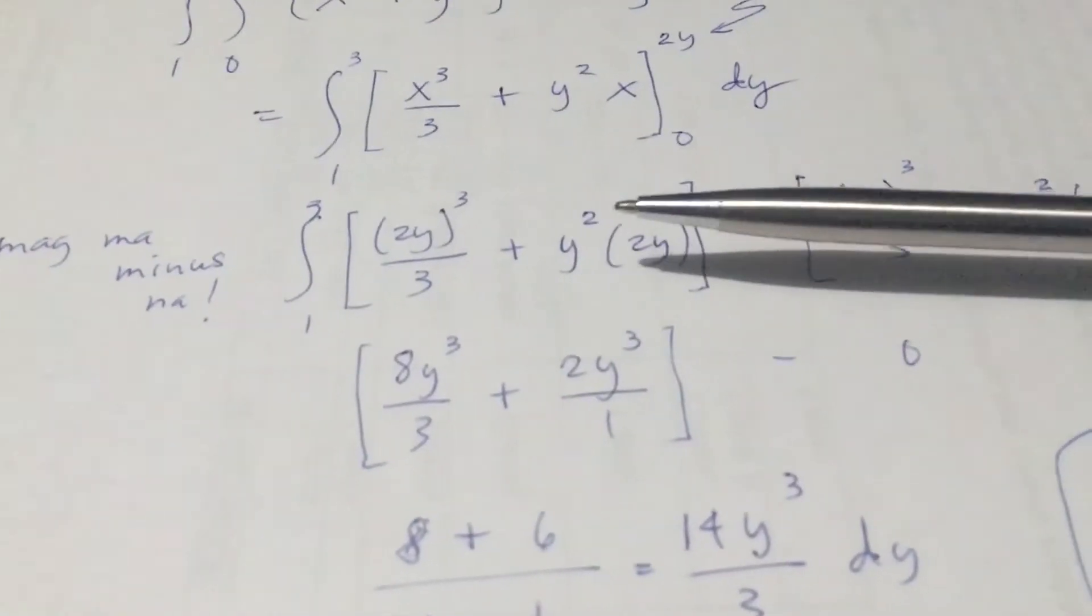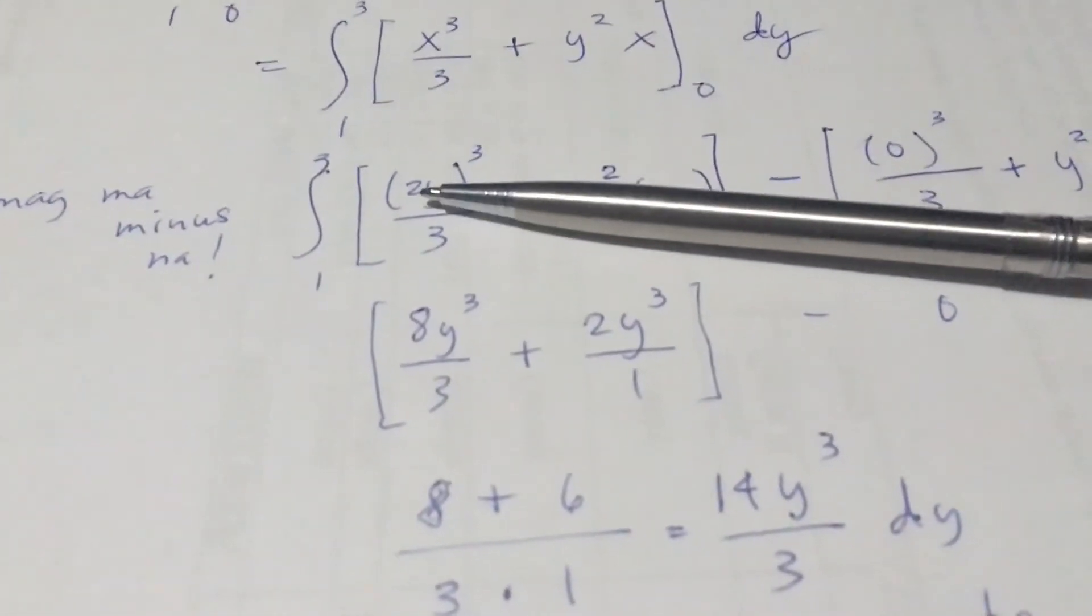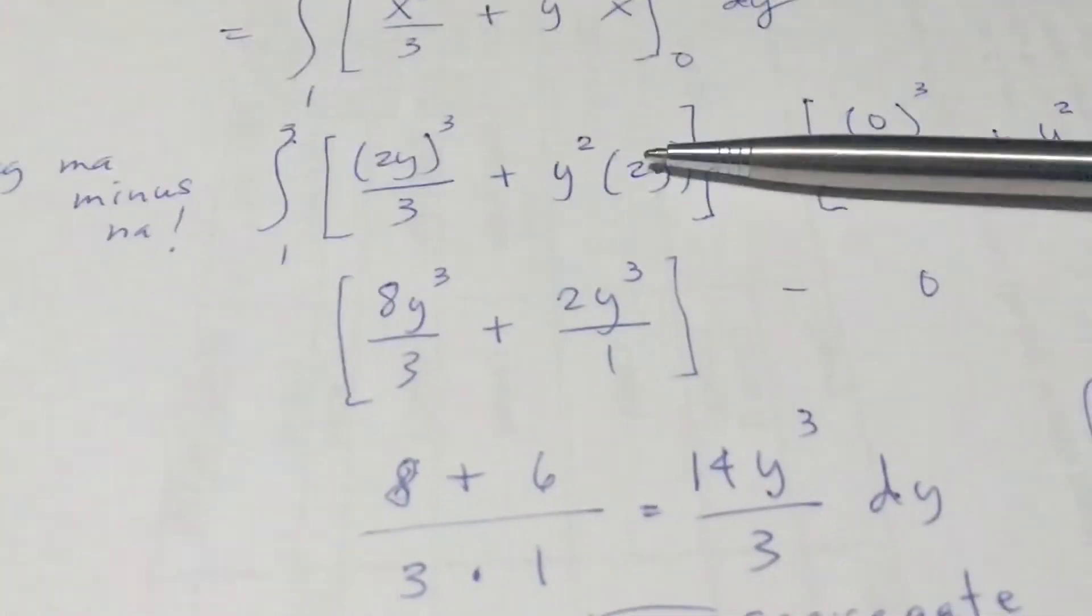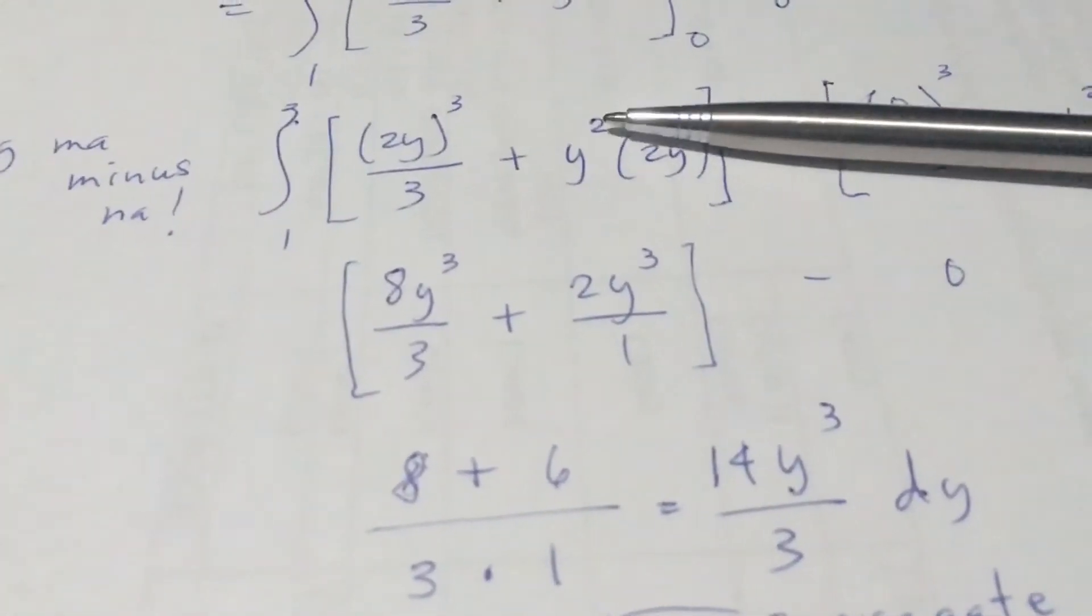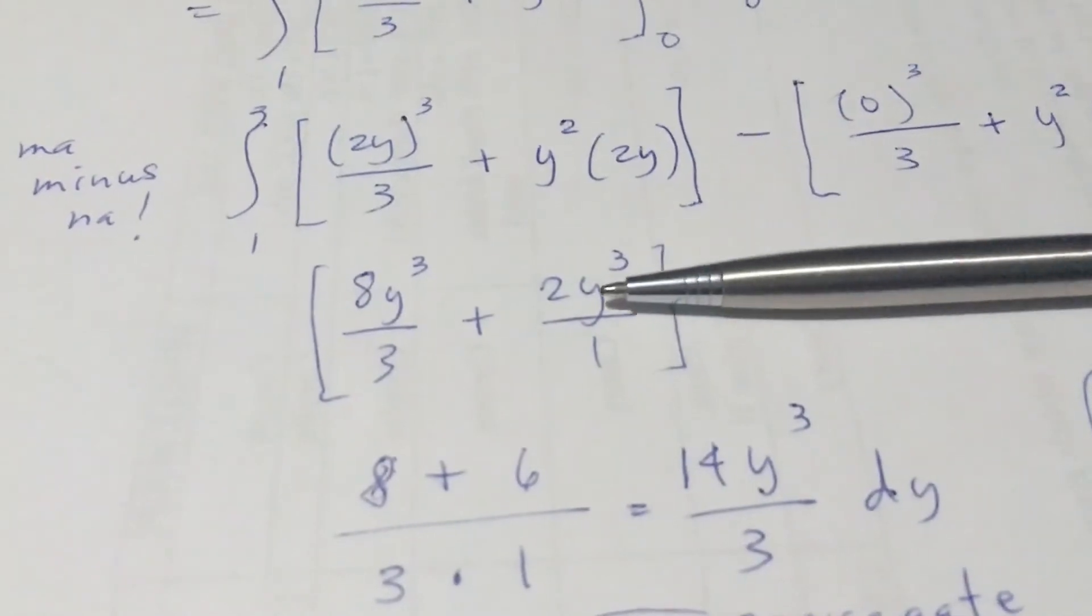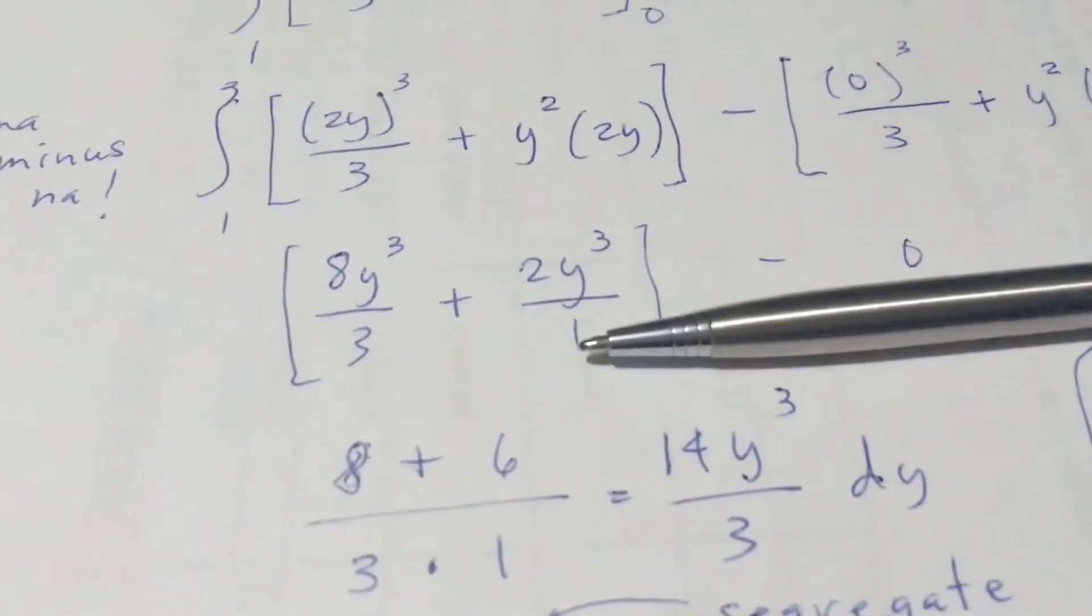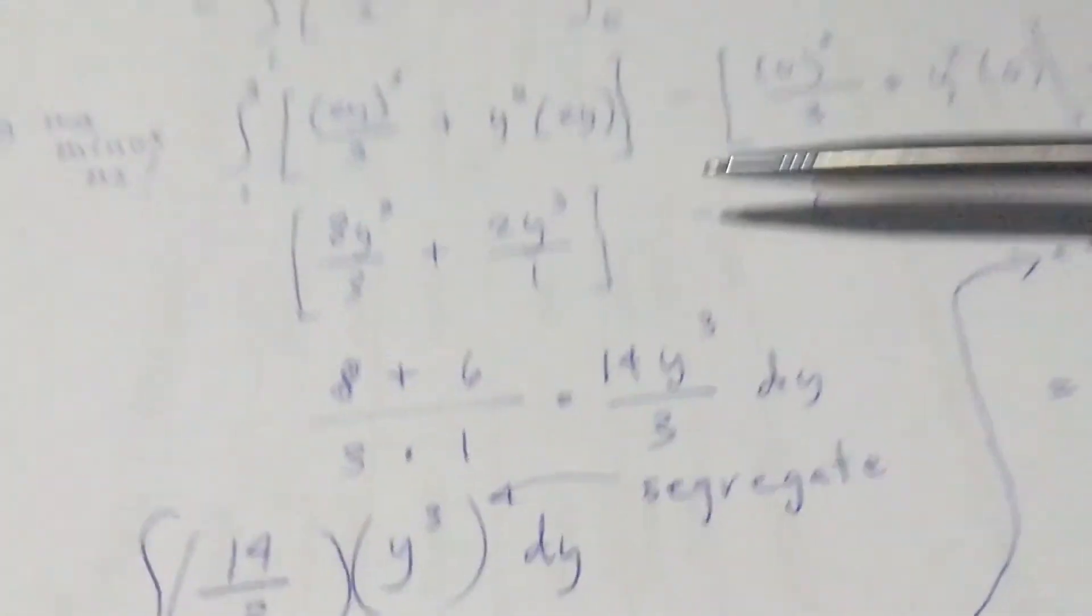And then after that we're going to raise that to the third power. That would be 8y raised to the third over three. And then y raised to the second will become y raised to the third because of this y. 2y raised to the third over one minus zero. You can omit that zero if you want to.